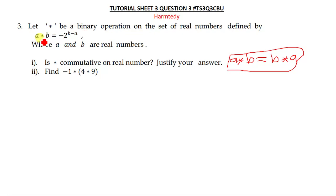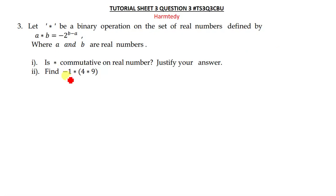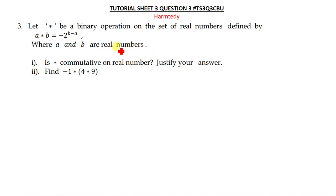To begin with, you need to know what real numbers are. Real numbers are simply a set of rational and irrational numbers combined. So let's now try to see whether ★ is commutative. We can either use letters or numbers to determine whether it's commutative or not.